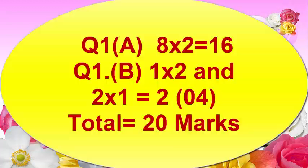In question 1A, there will be 8 sub-questions. Each question will be for 2 marks. In question 1B, there will be 3 sub-questions — 1 sub-question will be for 2 marks and 2 questions will be for 1 mark each. So question number 1A and 1B together will be for 20 marks.